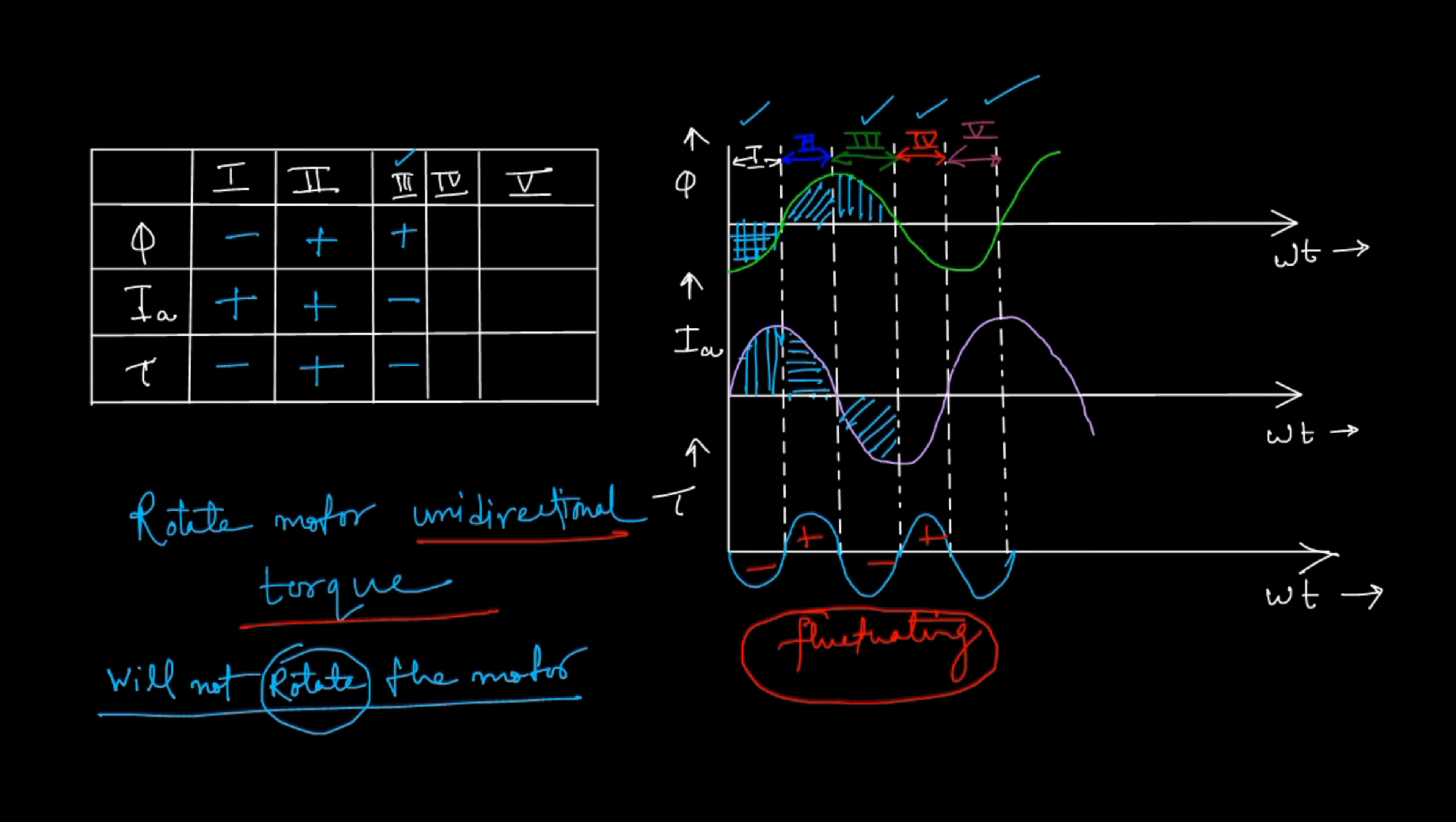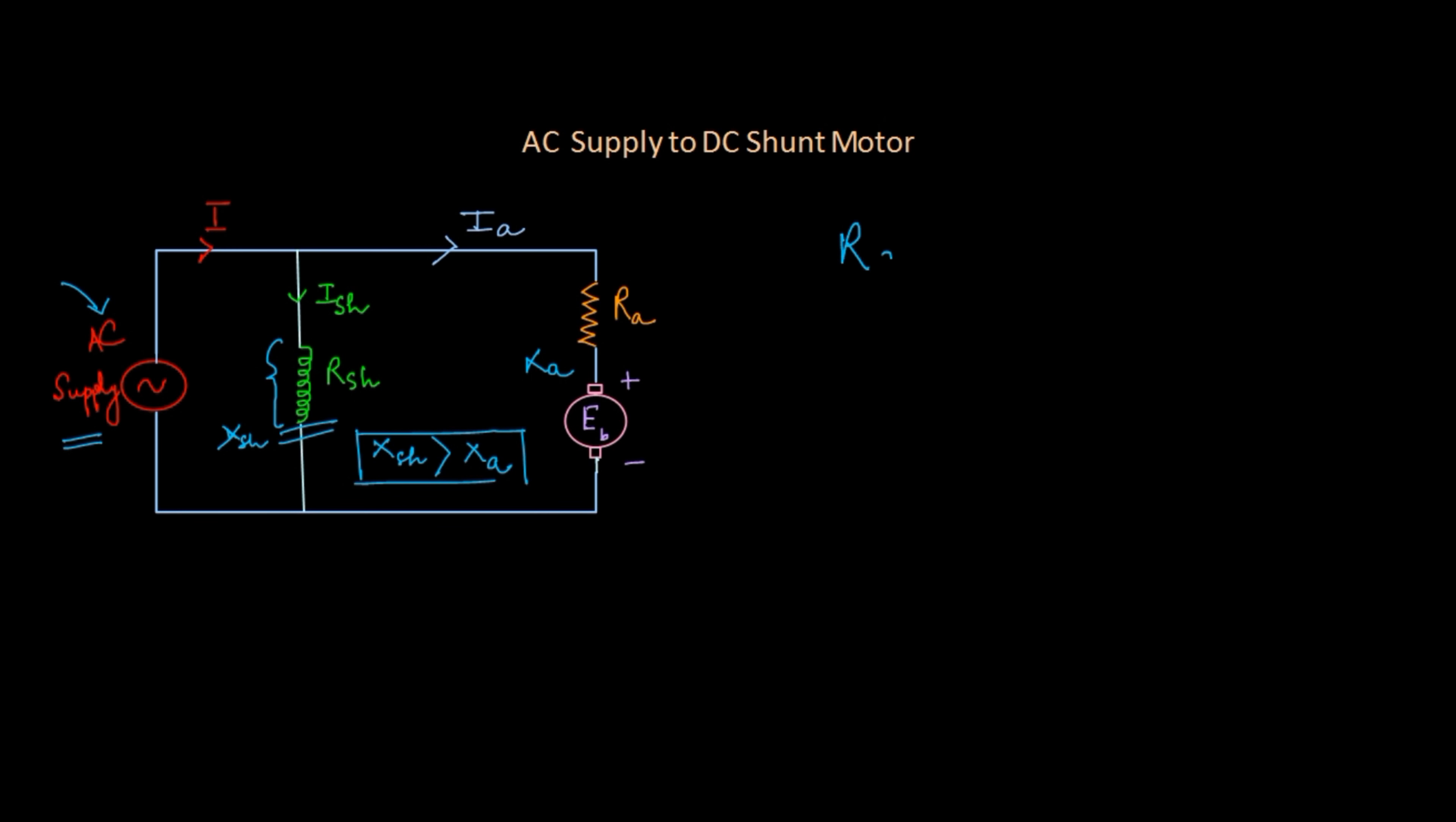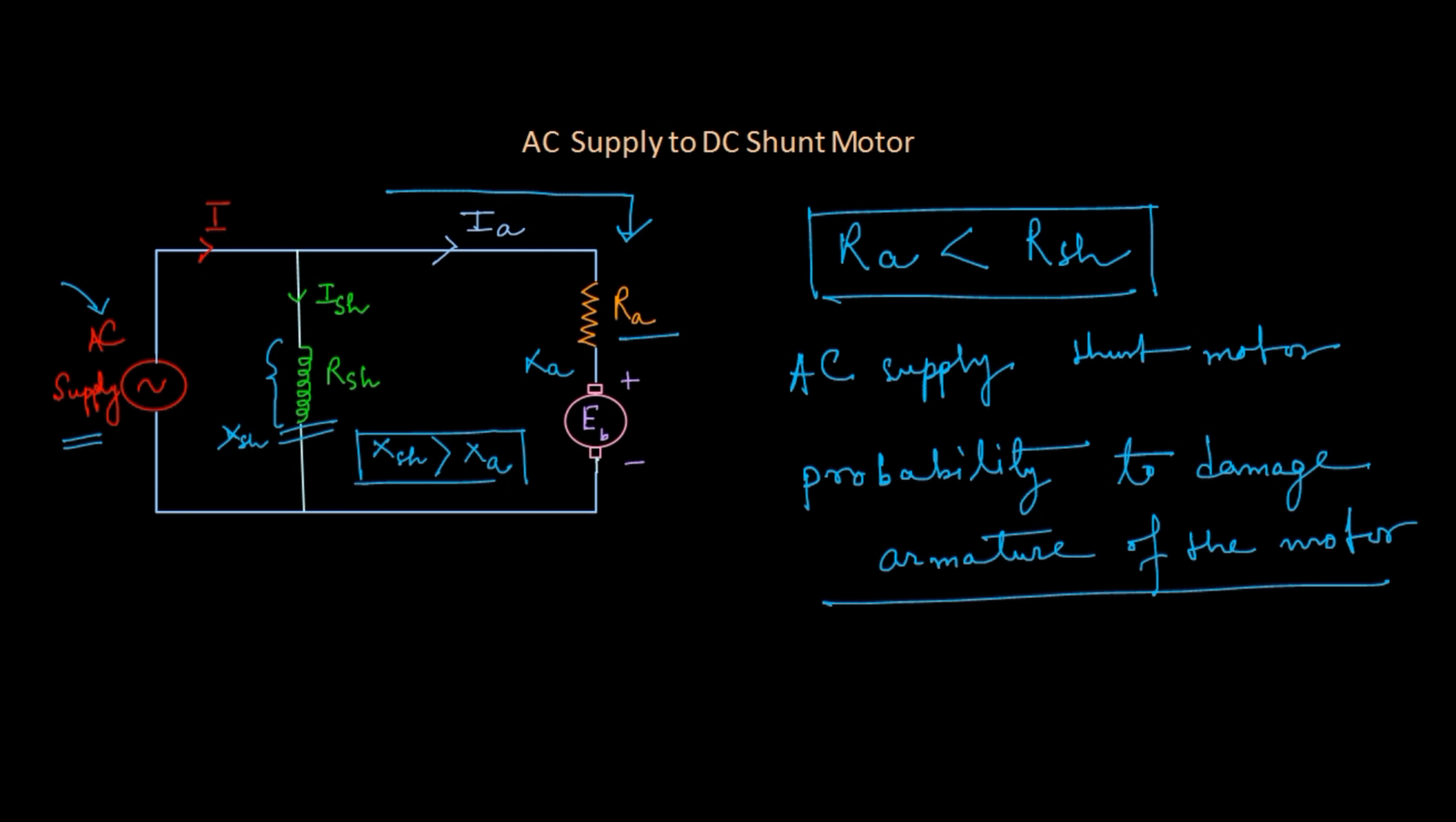Another thing is we know armature resistance, that is Ra, is less than shunt resistance Rsh. So whenever you are applying AC supply to a shunt motor, the maximum current will try to flow through this armature resistance or through the armature. That means you have a probability to damage the armature of the motor.